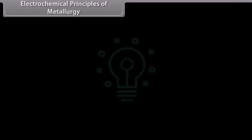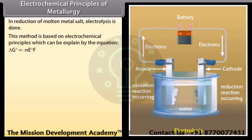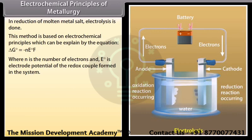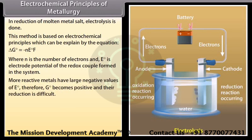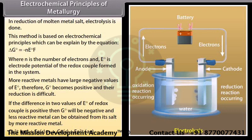Electrochemical principles of metallurgy. In reduction of molten metal salt, electrolysis is done. This method is based on electrochemical principles which can be explained by the equation Delta G0 is equal to minus N E0 F, where N is the number of electrons and E0 is electrode potential of the redox couple formed in the system. More reactive metals have large negative values of E0. Therefore, G0 becomes positive and their reduction is difficult. If the difference in two values of E0 of redox couple is positive, then G0 will be negative and less reactive metal can be obtained from its salt by more reactive metal.